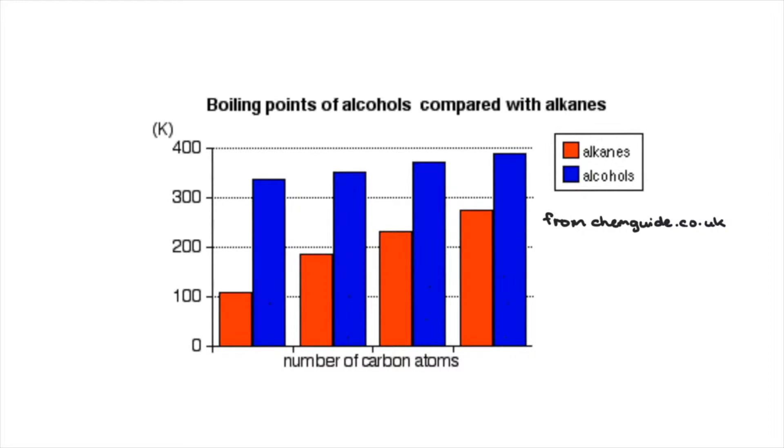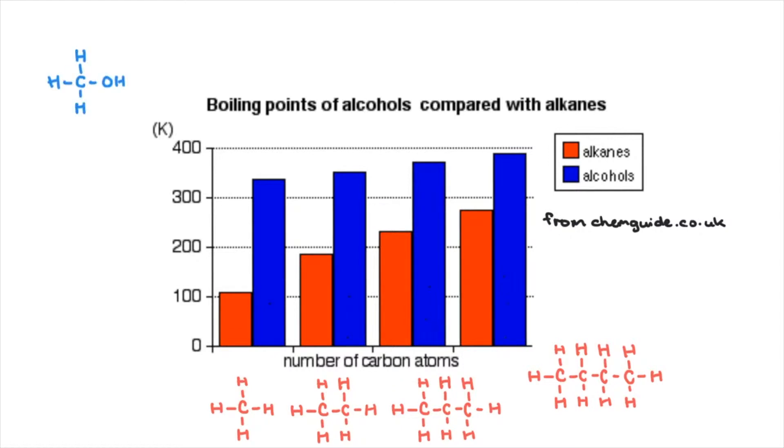This graph shows in red methane, ethane, propane and butane versus in blue methanol, ethanol, propanol and butanol. By the way this graph was sourced from chemguide.co.uk. But why is this the case?